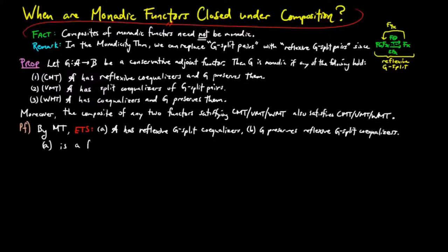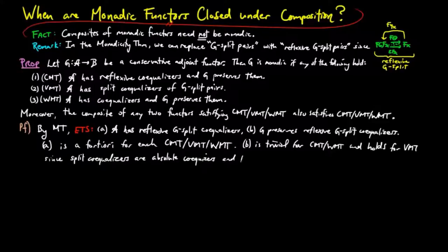For A, it is a priori for each CMT, VMT, and WMT. B is by the hypothesis for CMT and WMT, and holds for VMT, since split co-equalizers are absolute co-limits, and thus are preserved by any functor. Thus, g is monadic if it satisfies CMT, VMT, WMT, respectively.